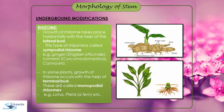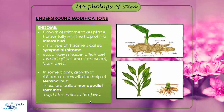In some rhizomes, growth occurs with the help of the terminal bud, and that rhizome is known as monopodial rhizome, which is seen in lotus and Pteris. So rhizomes are of two types: sympodial rhizome, where growth takes place horizontally via lateral bud, and monopodial rhizome, where growth occurs via terminal bud.